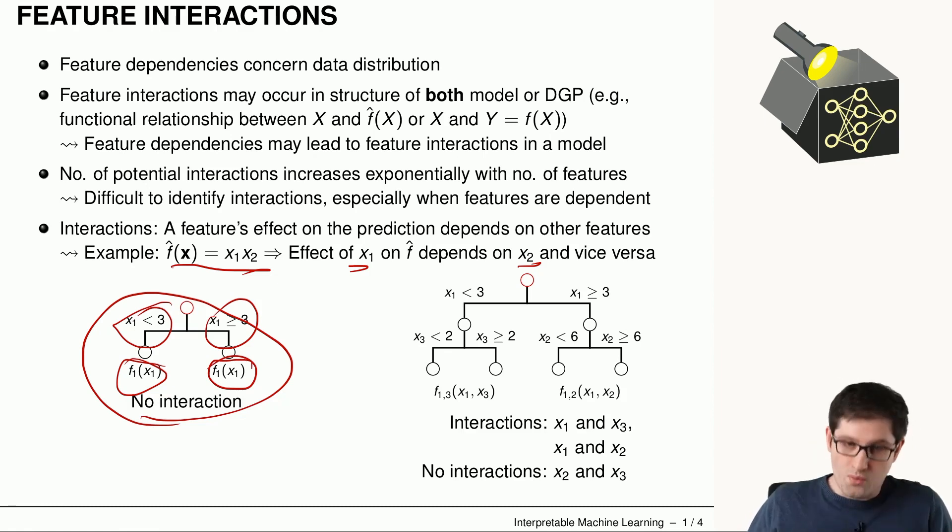In contrast, we can see here that we have two different features. So that the terminal node here depends on two features. So it's a function depending on x1 and x2. And here we have interactions between x1 and x3.